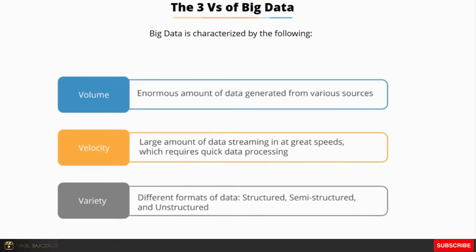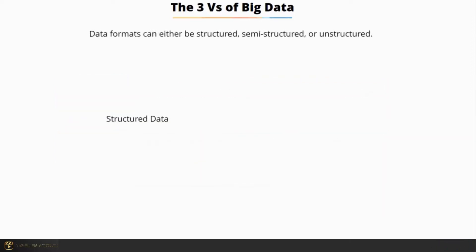Variety is the third V of big data because big data can be categorized into different formats like structured, semi-structured and unstructured. Structured data is usually referenced as RDBMS data which can be stored and retrieved easily through SQLs.